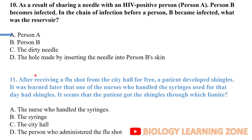After receiving a flu shot at city hall for free, a patient developed shingles. It was learned that one of the nurses who handled the syringes had shingles. It seems the patient got shingles through which format? The syringe — the syringe is the carrier for the infection.